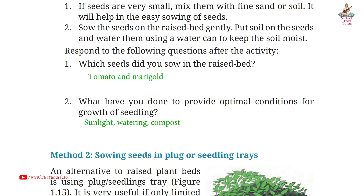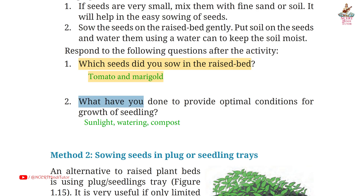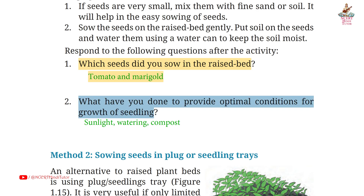Page 18, Question 1: which seeds did you sow in the raised bed? Answer: tomato and marigold. Question 2: what have you done to provide optimal conditions for growth of seedlings? Answer: sunlight, watering, compost.